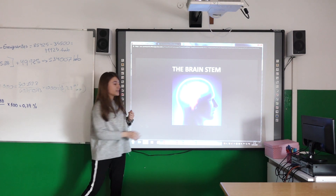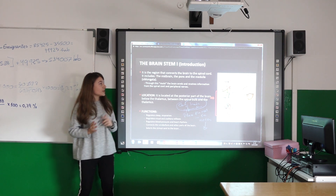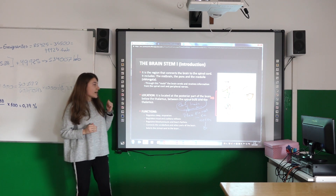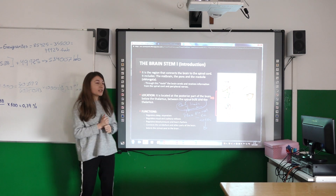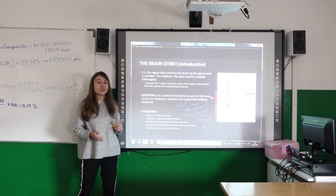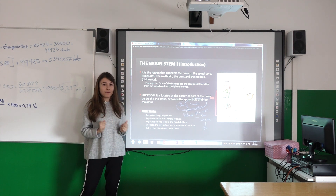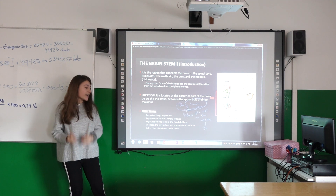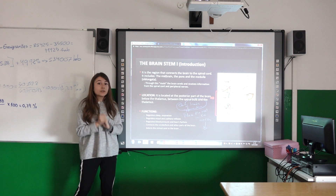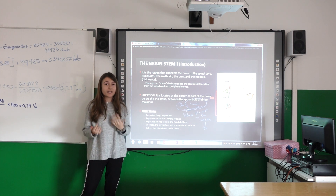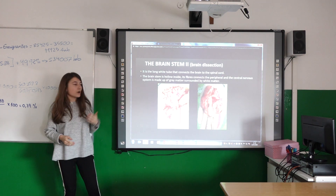Let's continue with the brain stem. The brain stem is a region that connects the brain to the spinal cord. It is located at the posterior part of the brain and it has several functions. It regulates sleep and respiration, it has a relation to visual and auditory reflexes. It regulates blood pressure and heart rate, connects all the brain parts, and also controls the stimuli sent to the brain. Here you can see a photo of the brain stem.